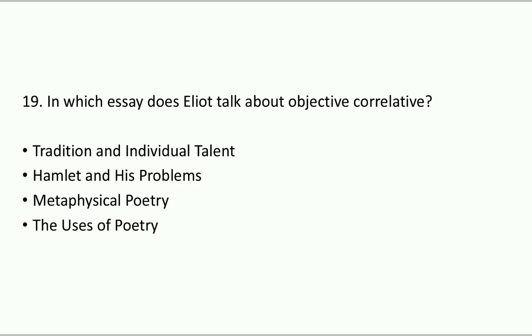Question number 19: In which essay does Eliot talk about Objective Correlative? Objective Correlative is the concept where writers convey emotions through the use of objects. Options: Tradition and Individual Talent, Hamlet and His Problems, Metaphysical Poetry, The Uses of Poetry. The right answer is Hamlet and His Problems. In this essay, Eliot discusses Objective Correlative and argues that Hamlet is an artistic failure.